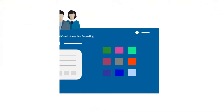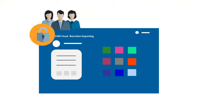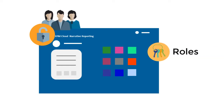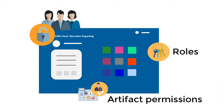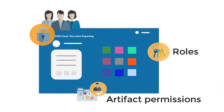In this overview, we'll show you the highlights of security, which ensure that each user has the role that they need to access the appropriate features and data. You implement security using a combination of roles and artifact-level permissions.